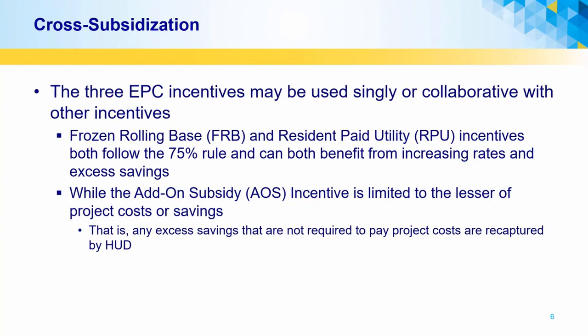The energy incentives can be used separately or in combinations for various measures and sites. This flexibility allows risks to be shared between concerns for savings persistence, forward-looking rates, verification methods and costs, and equipment selection and performance. The frozen base and RPU methods follow a similar method where the savings are directed towards retrofits by committing that at least 75 percent of savings must be used to cover project costs, while additional subsidy is limited by the lesser of savings or costs. Excess savings can be shared between methods to cover shortfalls, but the incentive restrictions must be enforced.